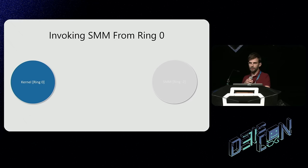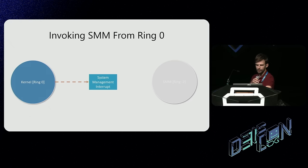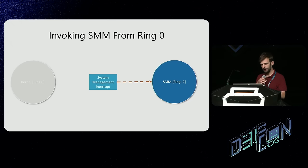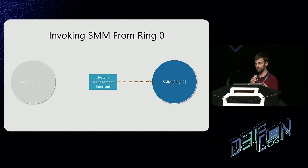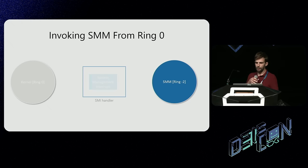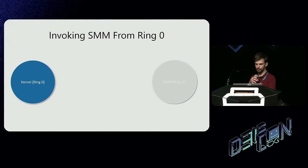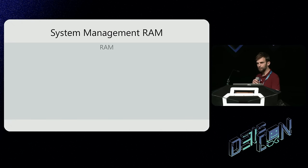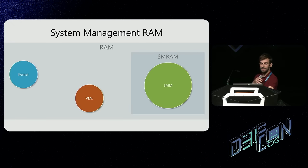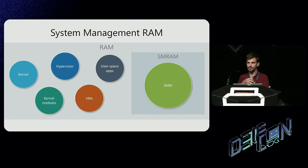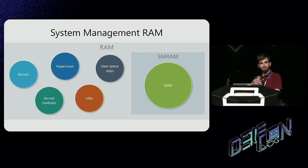In order to switch to SMM, the kernel has to trigger a special kind of interrupt called a System Management Interrupt, or SMI for short. Once an SMI is triggered, the processor switches to running SMM and the kernel is no longer active. Just like any other interrupt, there is an SMI handler corresponding to the interrupt number triggered. Once the SMI handler is done running, the processor switches back to the kernel. The SMM resides in a special, well-guarded portion of RAM called SMRAM — System Management RAM — while all other entities have no access to SMRAM whatsoever. If the kernel tries to read from SMRAM, it gets a bunch of FFs. Overall, looks like a worthy target.